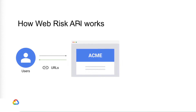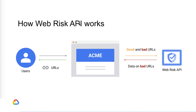To defend their users and the site against these attacks, Acme decides to use the WebRisk API to filter all incoming posts for unsafe content. Acme just needs to extract the URLs from the posts and send them to the WebRisk API, which will let Acme know if a URL is unsafe or not. Acme can then decide to post these URLs or not on their website.